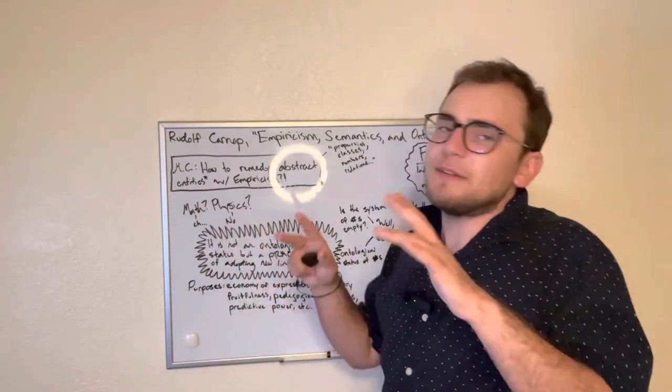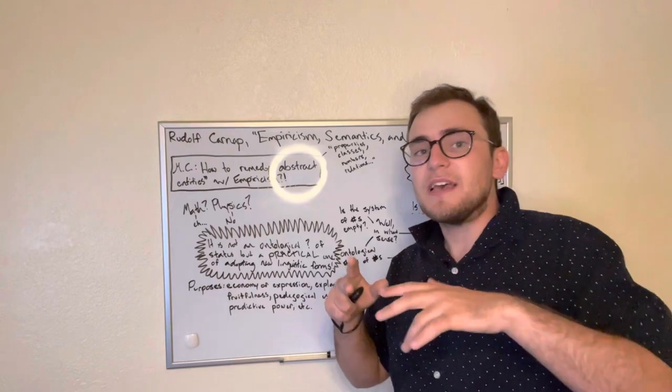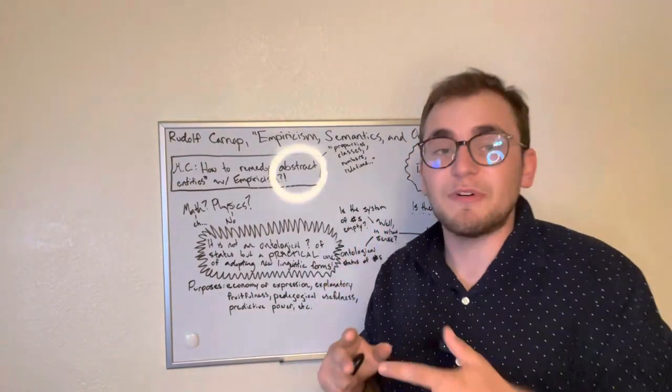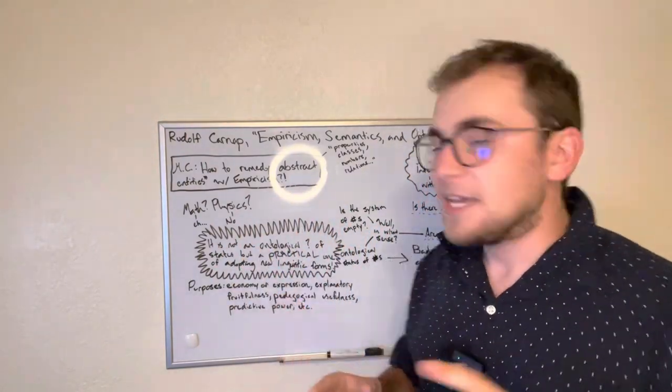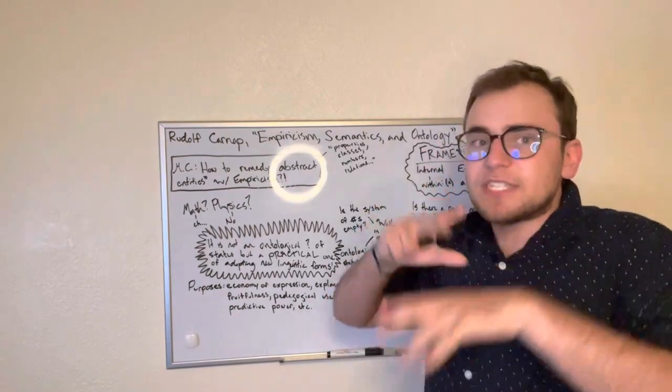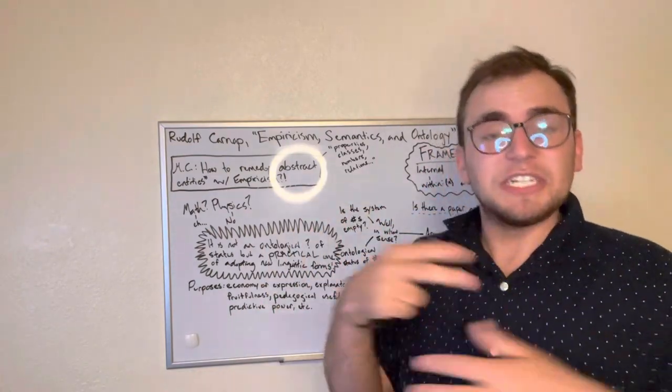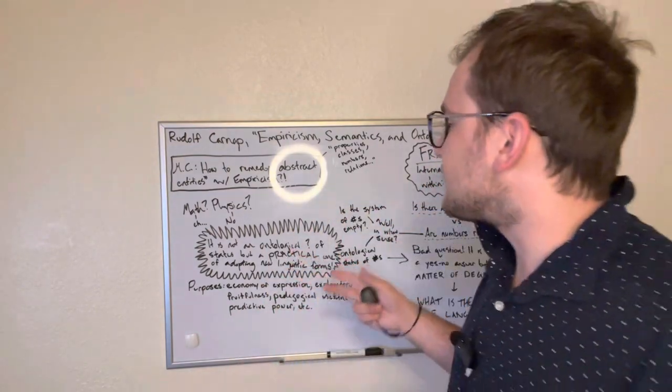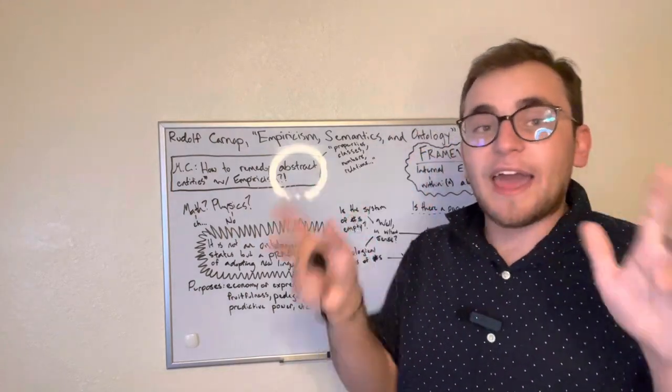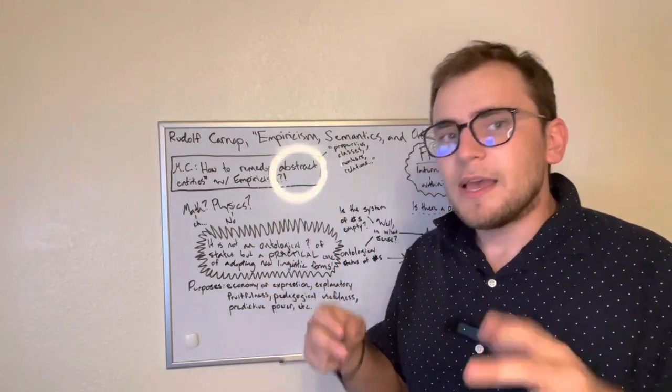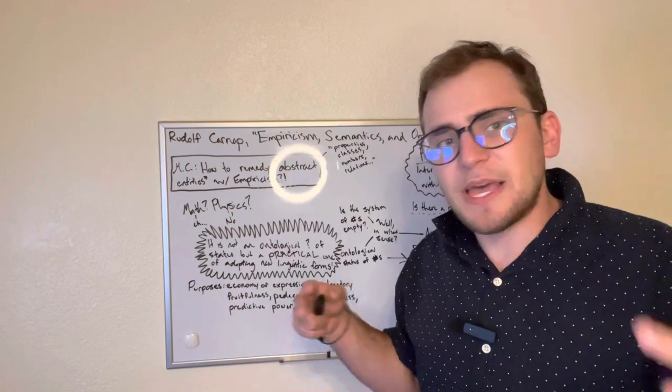And he says math, people try to get away with just claiming as a mere calculus, a mere system of formal rules that we set up and kind of use to say, hey, we set up these rules. Here's a game. It's kind of like chess where we set up the rules of chess. And then it's almost like every variation of the pieces has already kind of been seen and explained through the rules.